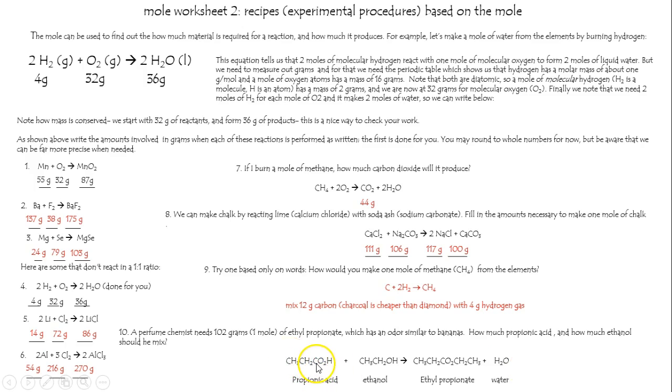They're only asking for the two reactants, but I think everything's thrown in there for you. Best way is to turn this into a plain old molecular formula. I'm thinking C3H3O6, C3H6O2, plus C2H6O. If you add them up, you get 74 grams for the propionic acid, 46 grams for the ethanol. Check the mass balance on that. You should see that you're okay. And this is Mole Worksheet 2, Recipes Based on the Mole.